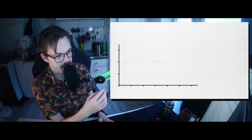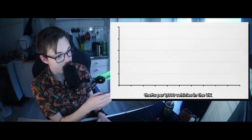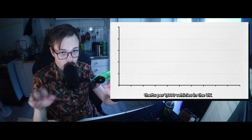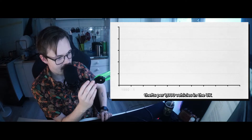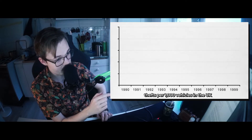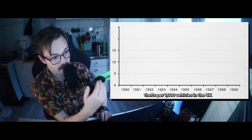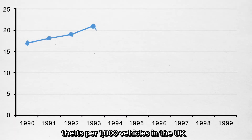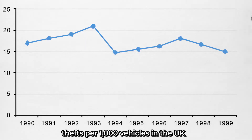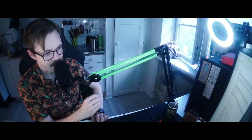This is a line graph. Specifically, it's a diagram over thefts per 1,000 vehicles in the UK. The x-axis, that's the horizontal one, stretches between the years 1990 and 1999, and the y-axis starts at zero — that's zero thefts per 1,000 vehicles — and it goes all the way up to 25. Now, this blue line is the data at hand, and this data can absolutely be interesting on its own.